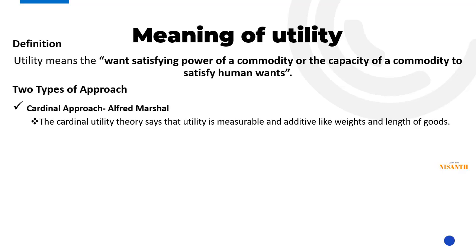There are two main approaches: the cardinal utility approach and the ordinal approach. The cardinal approach attempts to measure utility as a quantity.